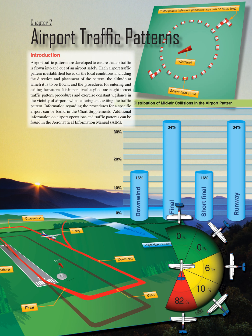Chapter 7: Airport Traffic Patterns Introduction. Airport traffic patterns are developed to ensure that air traffic is flown into and out of an airport safely. Each airport traffic pattern is established based on the local conditions, including the direction and placement of the pattern, the altitude at which it is to be flown, and the procedures for entering and exiting the pattern. It is imperative that pilots are taught correct traffic pattern procedures and exercise constant vigilance in the vicinity of airports when entering and exiting the traffic pattern.